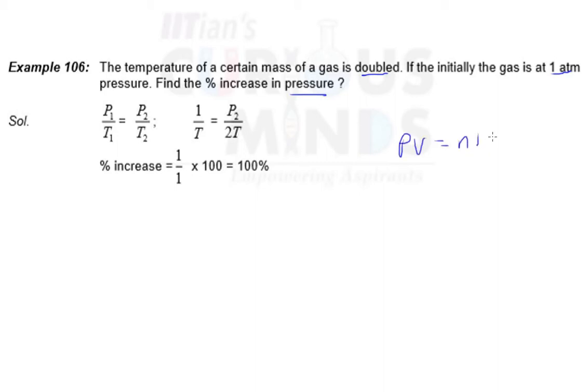So PV is equal to NRT. If temperature increases and this results in an increase in pressure, then you can always assume NR and V as constant. So basically P by T equals NR by V, which are all constant. So P by T is constant, meaning you can always say P1 by T1 is P2 by T2.